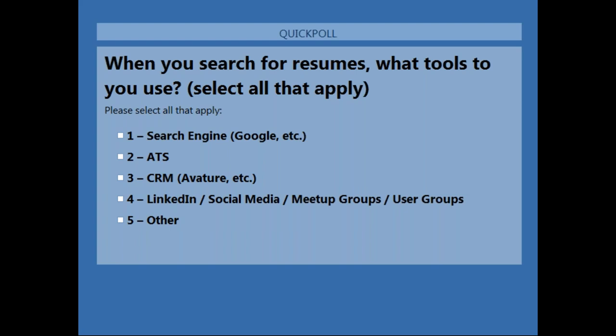The quick poll question is: when you search for resumes, what tools do you use? Select all that apply. One is search engine — Google, Bing, Yahoo, etc. Two is ATS, CRM, Avature. Three is LinkedIn. Four is social media, meetup groups, and user groups. And five is other.